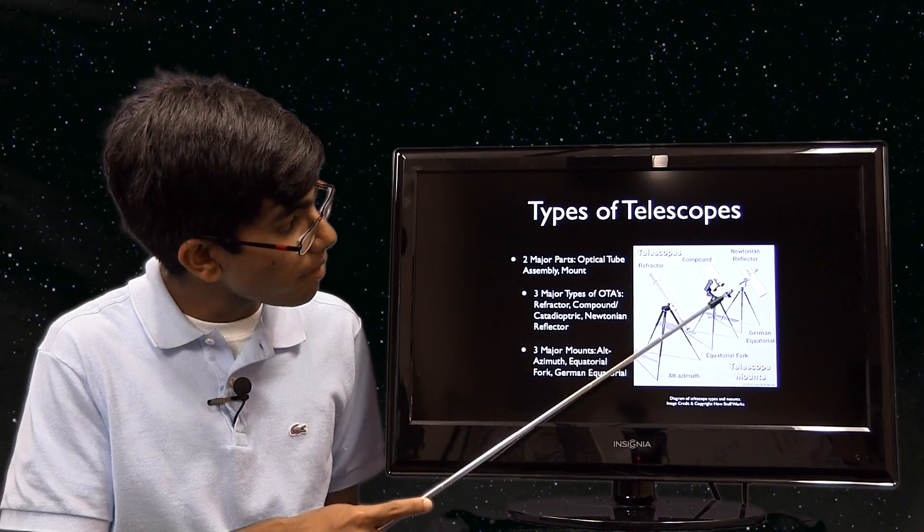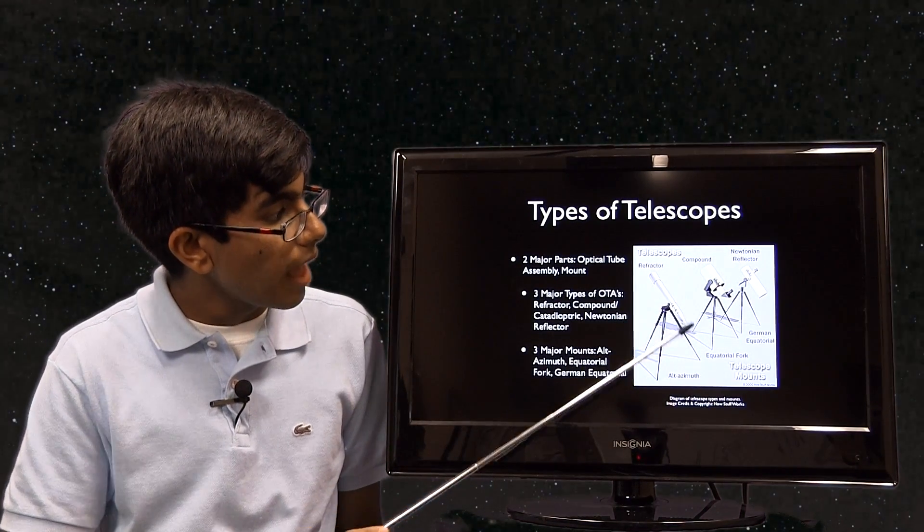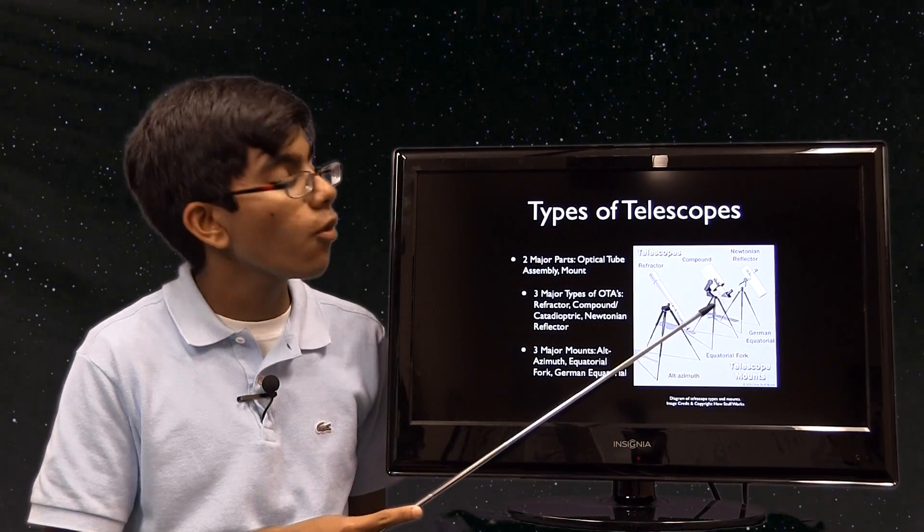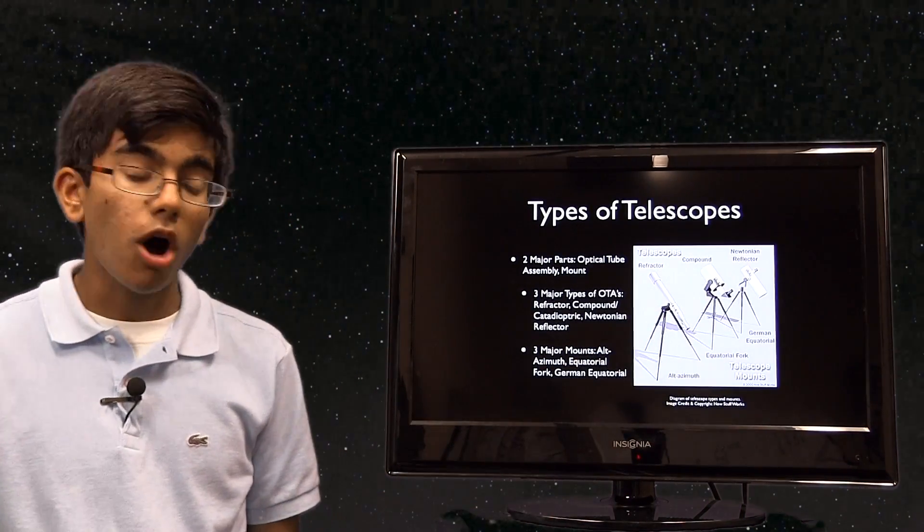Moving on, we can see a compound system here. This is a catadioptric system, and this is on an equatorial fork. See how it is on a fork as such. Normally this is stepping up the cost.